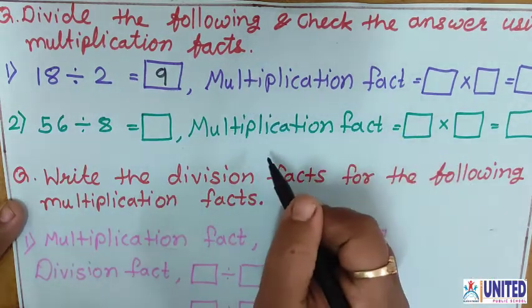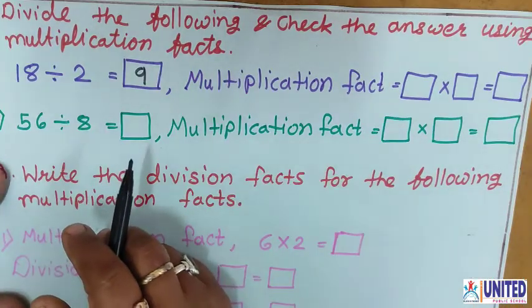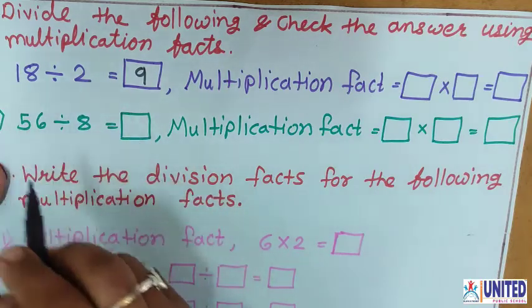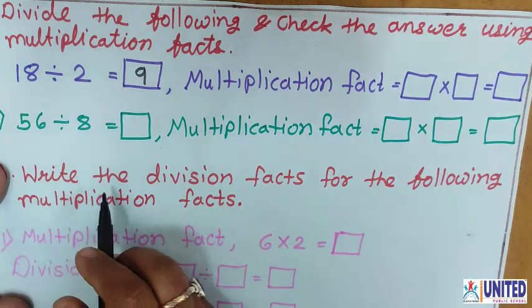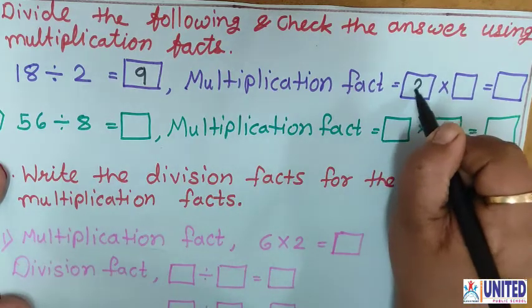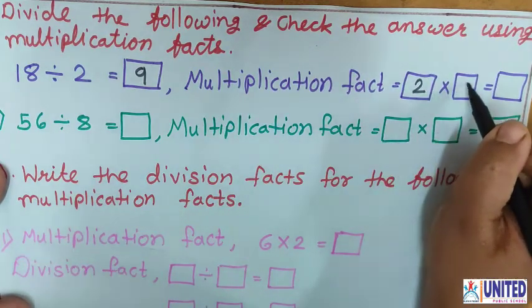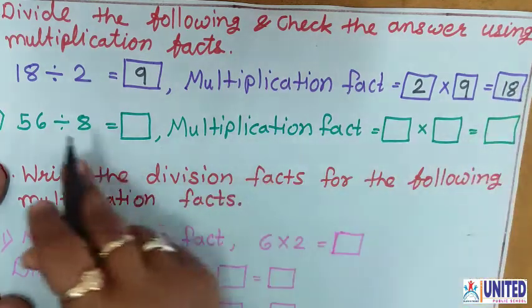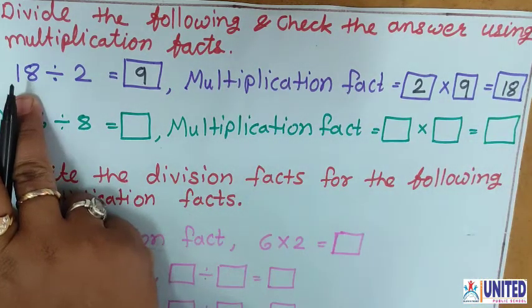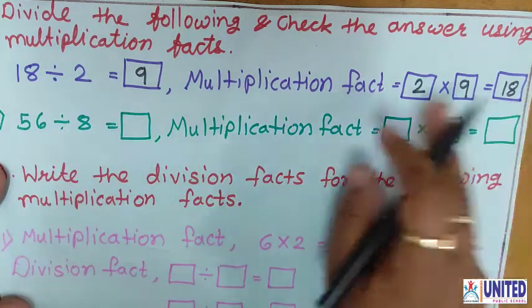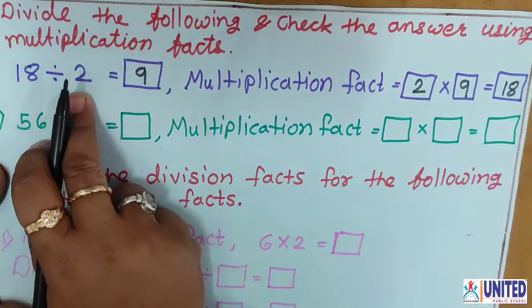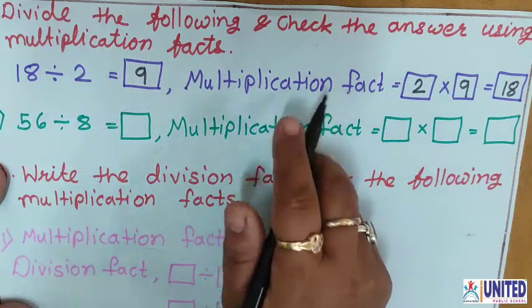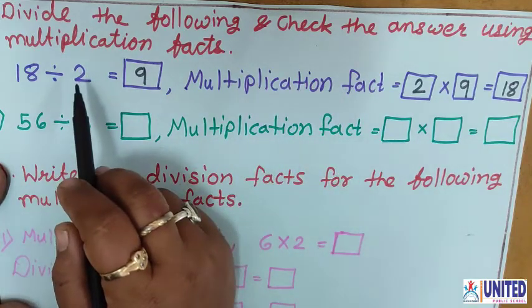So how can we write this multiplication fact? When we multiply 2 and 9, we get the answer 18. That is the multiplication fact. Let us check: 2 multiplied by 9 — 2 nines are 18. So the answer is the same as the number given here. That means our division is right. In this way, by using the multiplication fact, you can check your division answer.